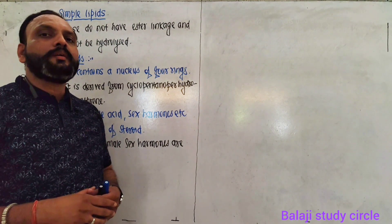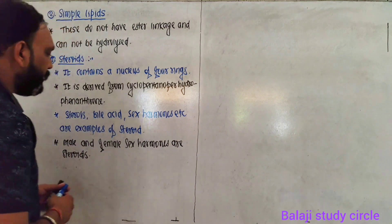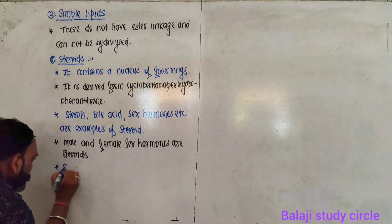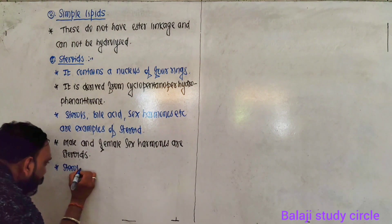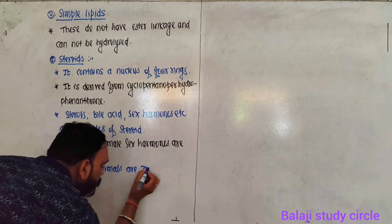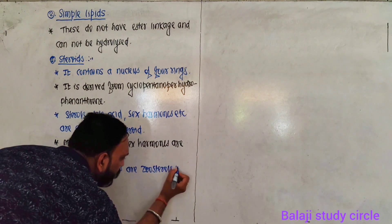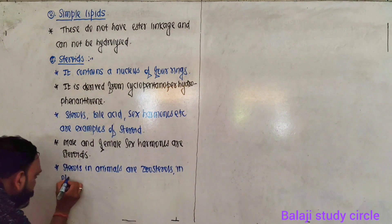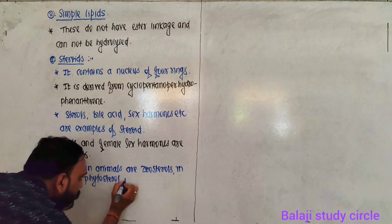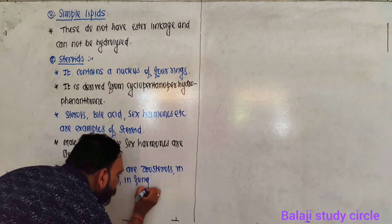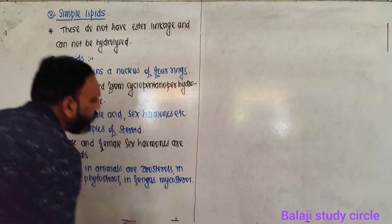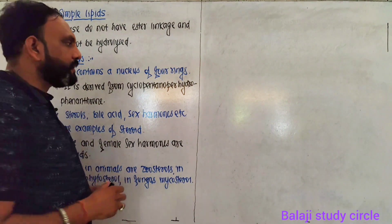Sterols differ by organism. In animals, sterols are called zoosterols. In plants, they are phytosterols. In fungi, they are mycosterols. Different species have different steroids.